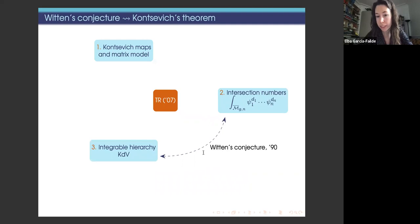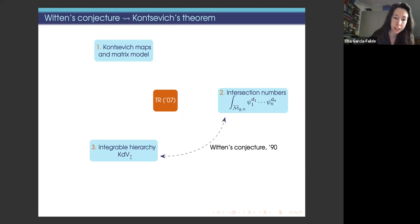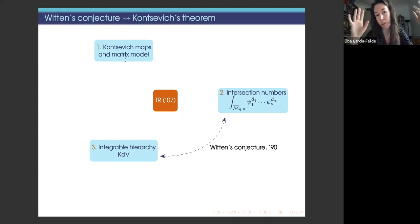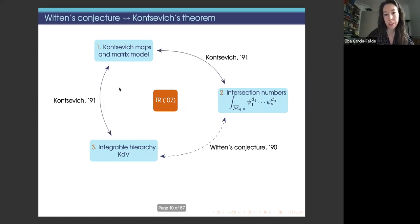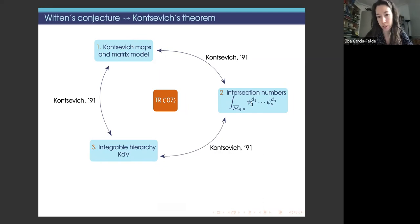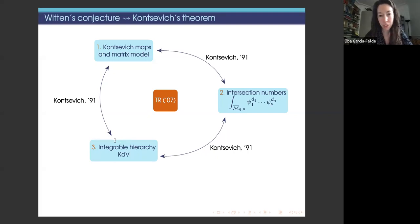Witten's conjecture was formulated in the 90s, predicting that intersection numbers of psi classes satisfy the KdV hierarchy. Just one year later, Kontsevich defined certain types of maps or graphs constituting a cell decomposition of a combinatorial model of moduli spaces. He related them to a matrix model, which in turn is related to the integrable hierarchy, and on the other hand related them to intersection numbers — thus proving Witten's conjecture just one year later.